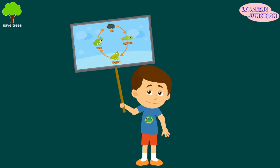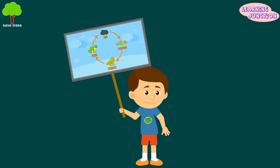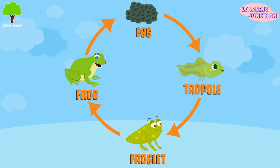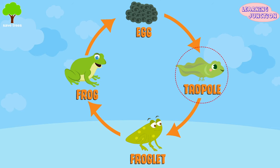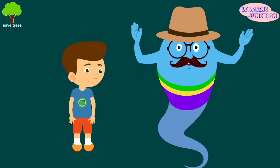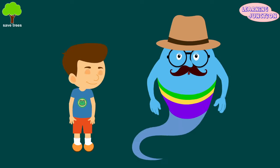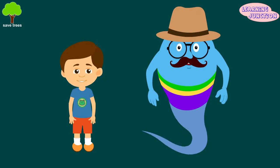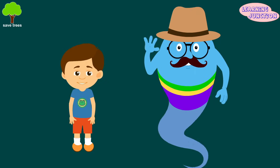Can you show the diagram to your friends? The first stage is egg, the second stage is tadpole, the third stage is froglet, and the last stage is adult frog. Now you know a lot about a frog's life cycle. Stay tuned for more videos. Bye-bye.